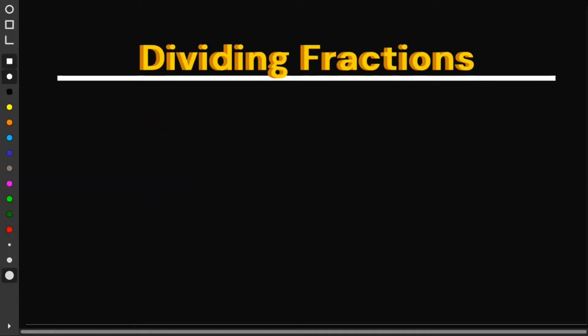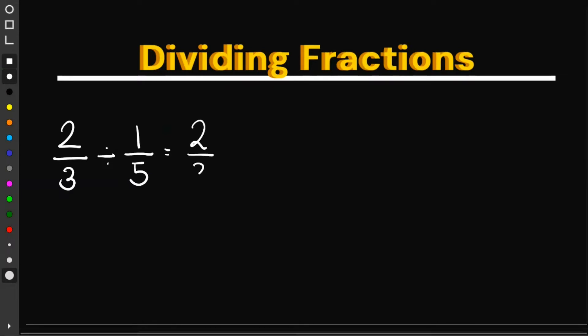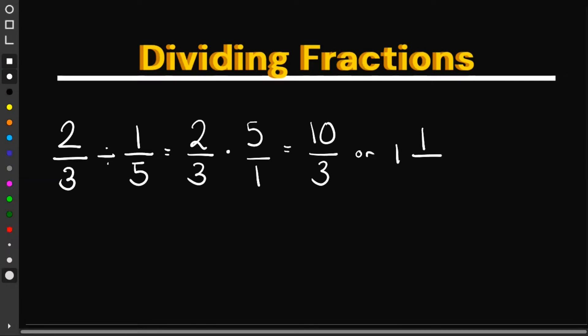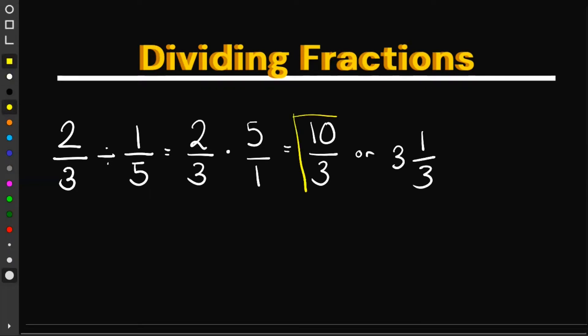Let's have some examples. If we have 2 over 3 divided by 1 over 5, this would give us 2 over 3 times 5 over 1. Multiplying this would give us 10 over 3, or 3 and 1 third. So this is the answer.